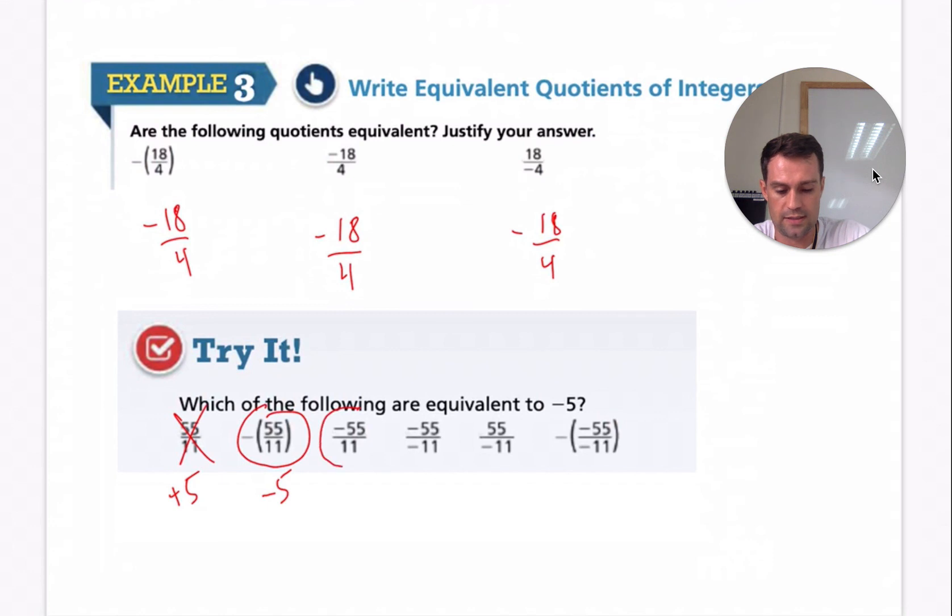It is this one because it's negative 55 over 11. Negative over a negative will become a positive. This would be positive five. So it is not this one. Five over negative 11 is negative five. So it is this one. Negative over a negative would be a positive five. But we still have our negative on the outside. So it is negative five. So it is also this one.